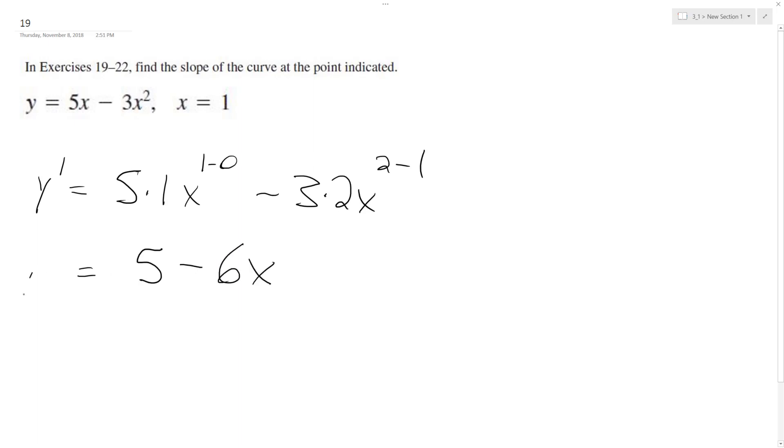So this is our y prime. We want to find y prime of x equals 1. We plug in 5 minus 6 times 1, and we get negative 1. This is our slope for the tangent line at that point.